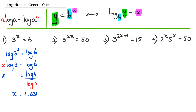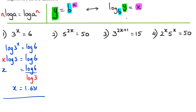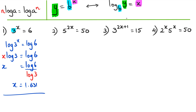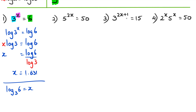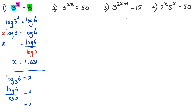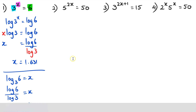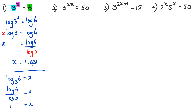The second method is converting from exponential to log form. Because we have 3 as our base, x as our power, and 6 as our answer, we can rewrite this as: log base 3 of 6 equals x. And as I showed earlier, log base 3 of 6 can be rewritten as log 6 divided by log 3, which equals 1.631. As you can see, either method works, so go with whichever you prefer.